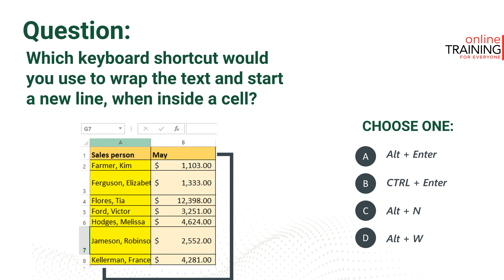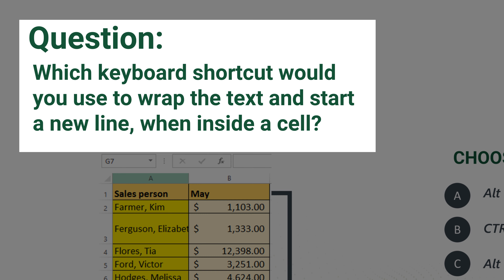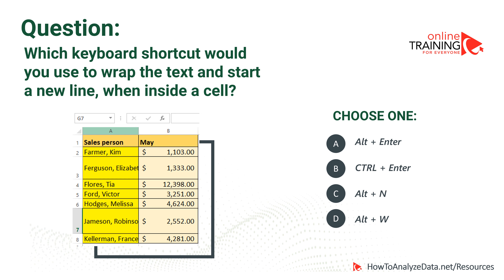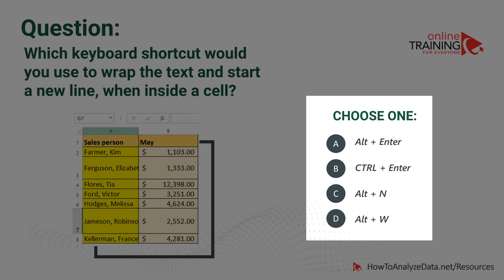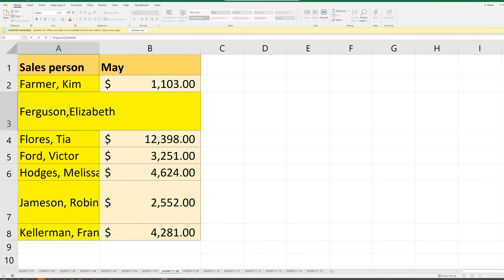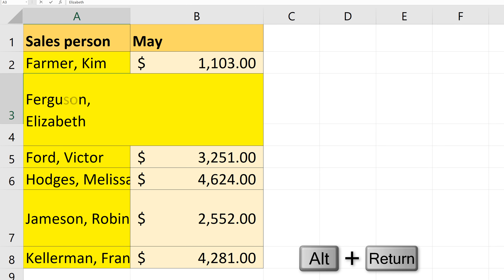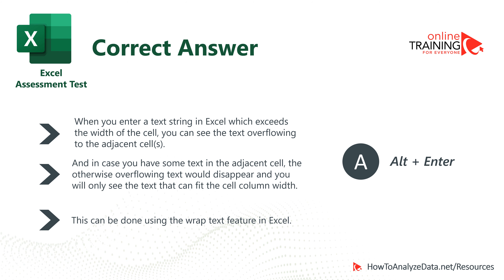Keyboard shortcut questions are very frequently presented as part of Excel assessment tests. Which keyboard shortcut would you use to wrap the text and start a new line when inside a cell? Four choices: Alt+Enter, Ctrl+Enter, Alt+N, and Alt+W. When you are inside a cell and need to continue text on a new line, you use Alt+Enter. When I press Alt+Enter, the first name that follows the last name starts on a new line. The correct answer is A — Alt+Enter. Very similar functionality can be accomplished using the Wrap Text feature of Microsoft Excel.